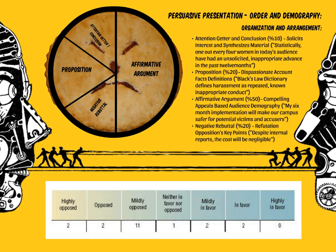Moving to the top of this slide, let's talk about the order and arrangement of persuasive presentations. It's a little bit different than the organization and structure of a traditional informative presentation. I've broken down by percentage the amount of time you'll generally want to spend on each section of the speech. For example, both your attention-getter and conclusion should only be about 10% of your speech — this solicits interest and at the end synthesizes your materials. Your proposition — which is your main argument, a dispassionate account of your facts, and definitions of any important points — is usually about 20% of your overall speech. And then there's your affirmative argument.